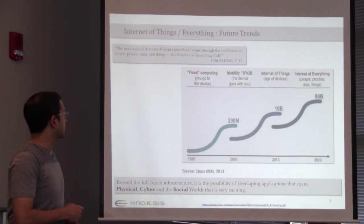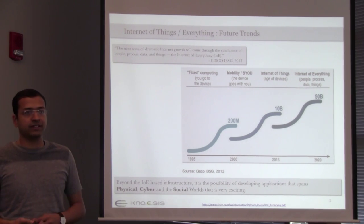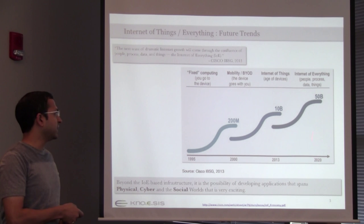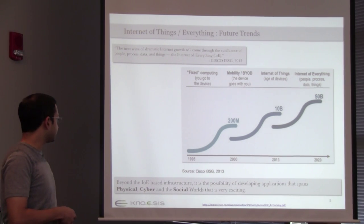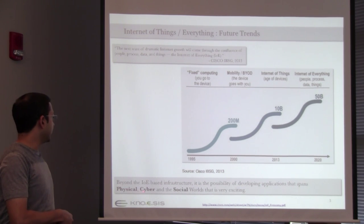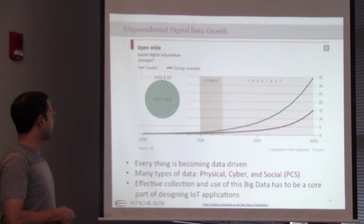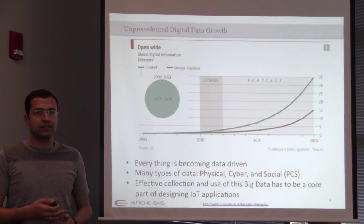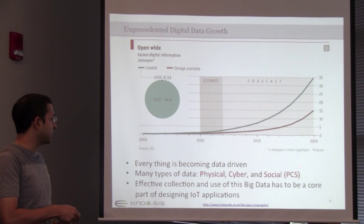The future trend looks the same — we have even more devices being connected. The history started with just computers being connected, then we moved to mobile devices, and now in 2020 it's expected that there are more than 50 billion devices and people connected to the internet. One thing to notice is that the data and information spans across physical, cyber, and social modalities. The digitization is being seen everywhere, and in 2008 we even surpassed the capacity to store whatever data we are generating. All the data spans not only one modality but across physical, cyber, and social modalities — from now on I refer to that as PCS.